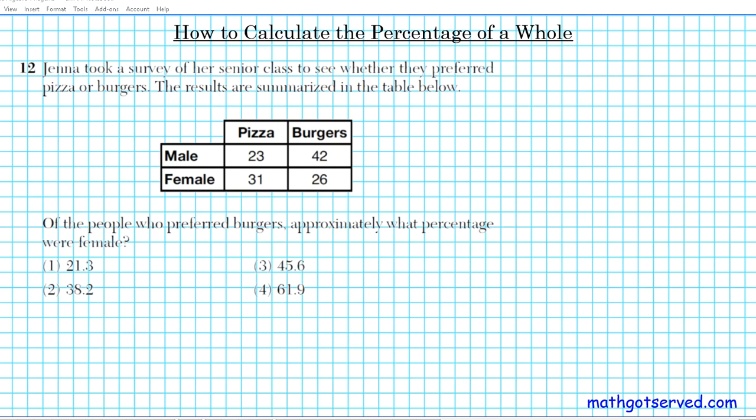Question 12 reads: Jenna took a survey of her senior class to see whether they preferred pizzas or burgers. The results are summarized in the table below. We have a table right here where the rows are represented by the gender male or female and the columns represent the food type they prefer pizza or burgers.